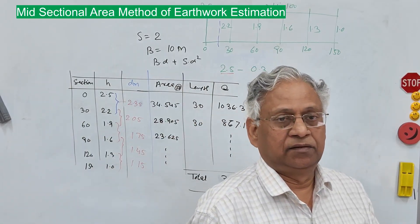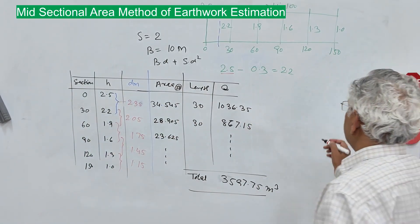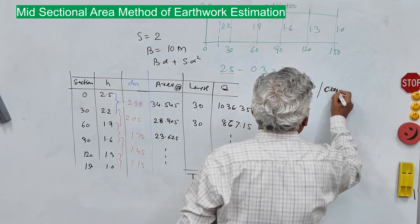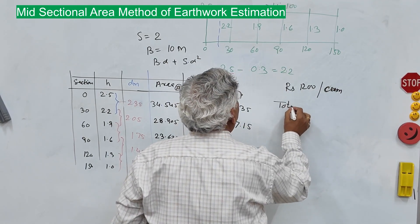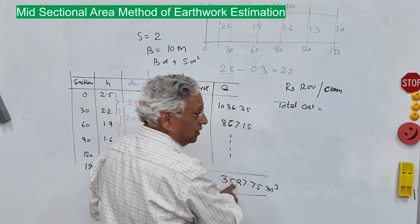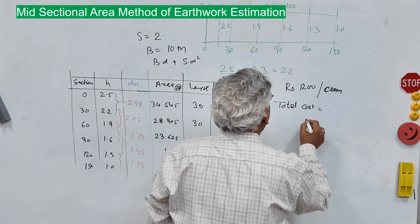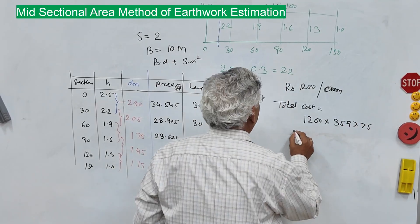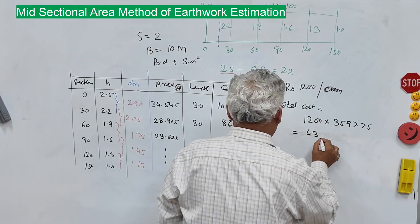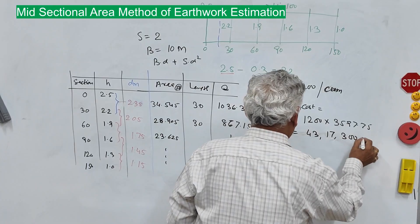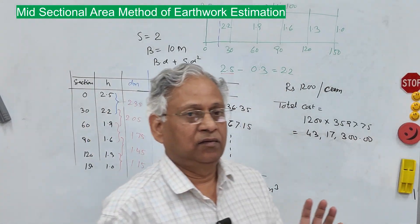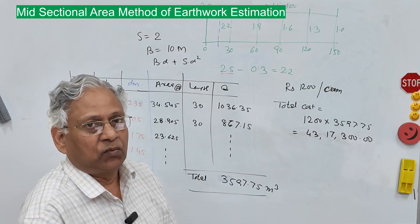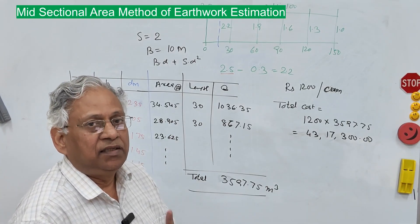If the rate of earthwork is 1200 rupees per cubic meter, then the total cost of earthwork is 1200 multiplied by 3597.75, which equals approximately 43,17,300 rupees. That is the cost of earthwork for 150 meters. That is how you determine the quantity and cost of earthwork using Method 1, the mid-sectional area method.